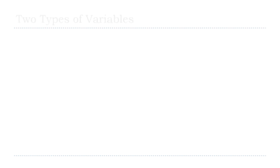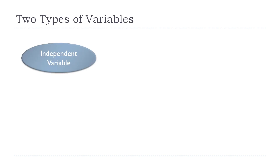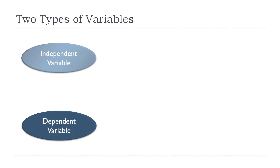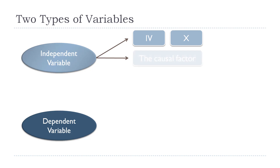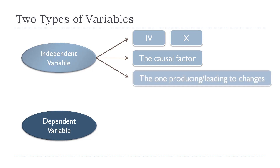There are two main types of variables in research: what we call the independent variable and the dependent variable. The independent variable — usually shortened to either IV or sometimes X — is what we consider the causal factor. It's the one that is producing or leading to some changes.